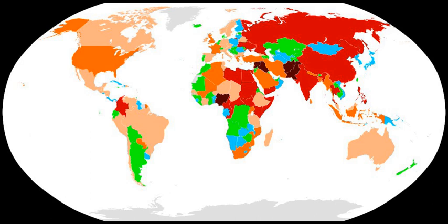There is no single internationally accepted definition of what constitutes terrorism. IEP accepts the terminology and definitions agreed to by the authors of the GTD, the National Consortium for the Study of Terrorism and Responses to Terrorism researchers and its advisory panel. The GTI therefore defines terrorism as the threatened or actual use of illegal force and violence by a non-state actor to attain a political, economic, religious, or social goal through fear, coercion, or intimidation.